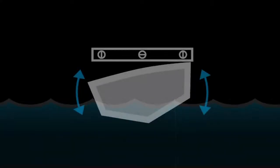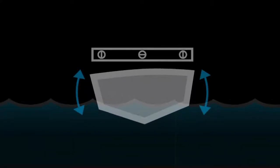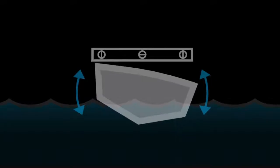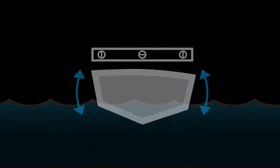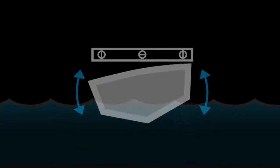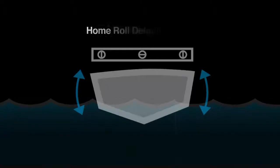Set up home roll default position. Once the auto glide is in home roll calibration mode, you can set the home roll default position. The auto glide will use this home roll position to level the boat automatically from port to starboard while on plane.